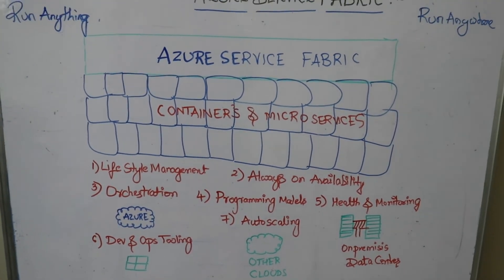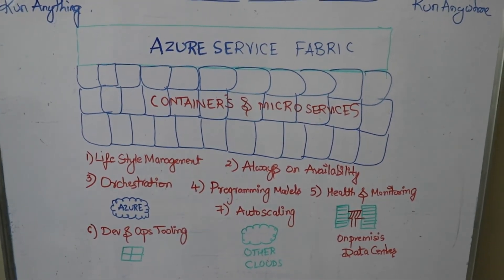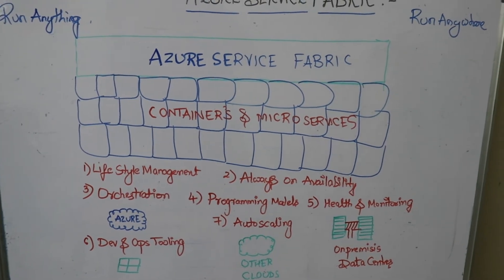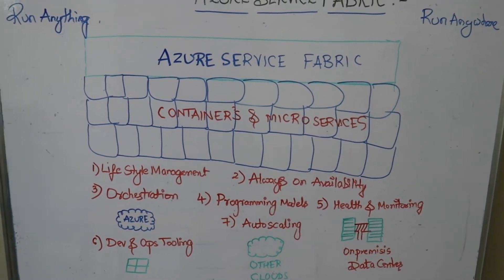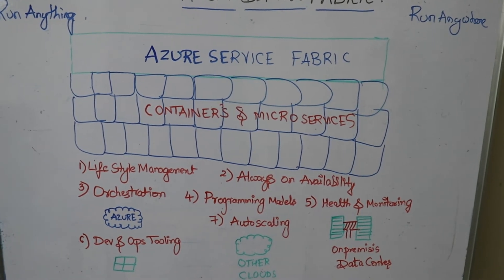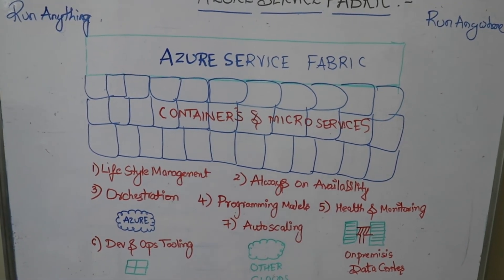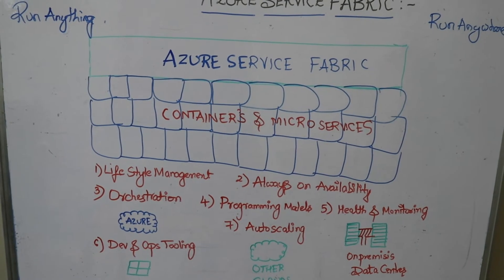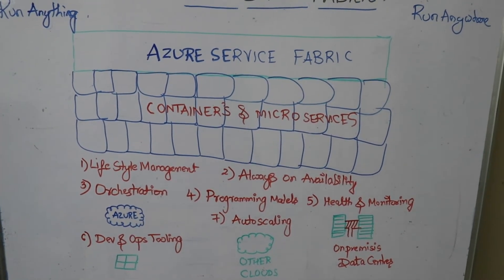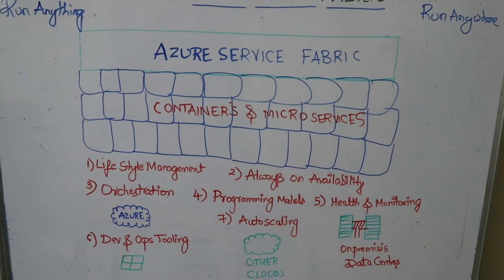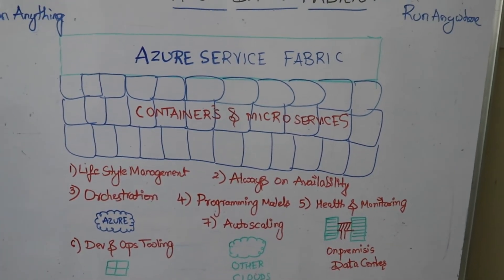You also have orchestration. Orchestration is similar to what lifecycle management is — it itself automatically updates, upgrades everything on the containers front. Any kind of patching or upgrades — orchestration by itself does it in the Azure cloud.